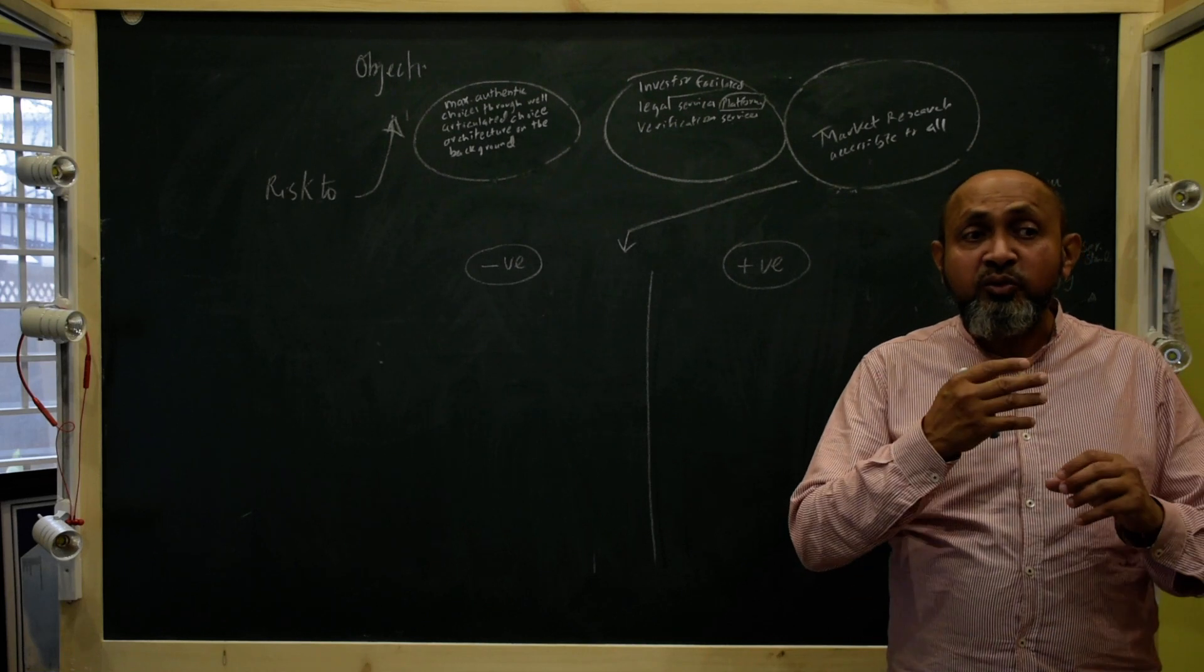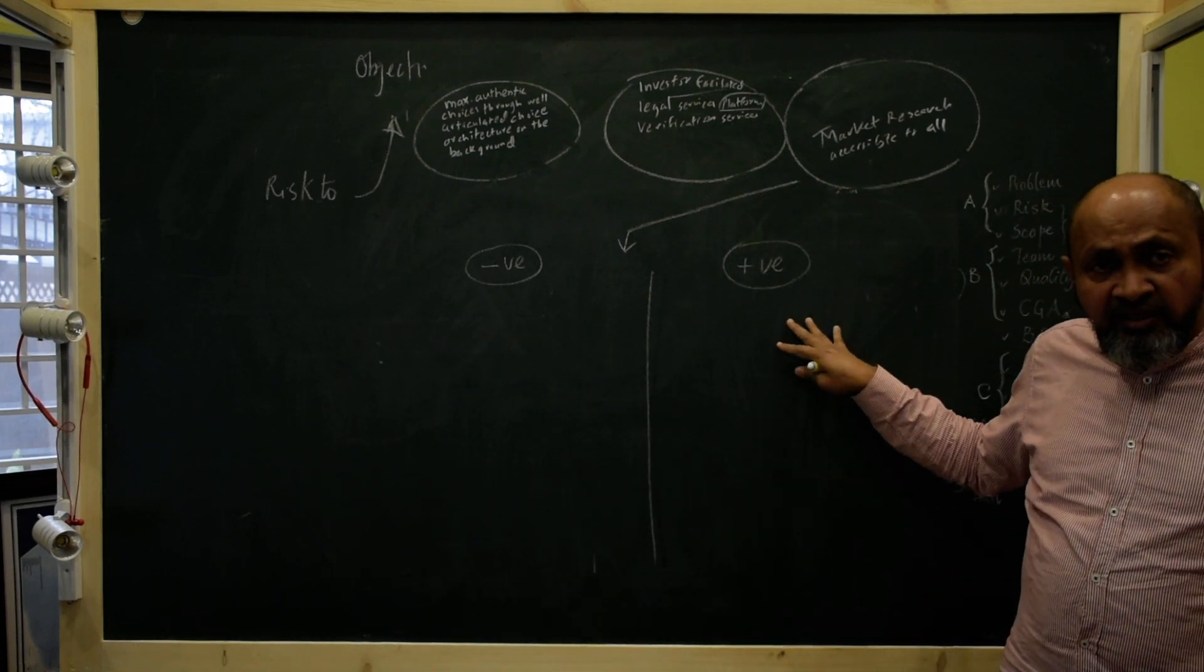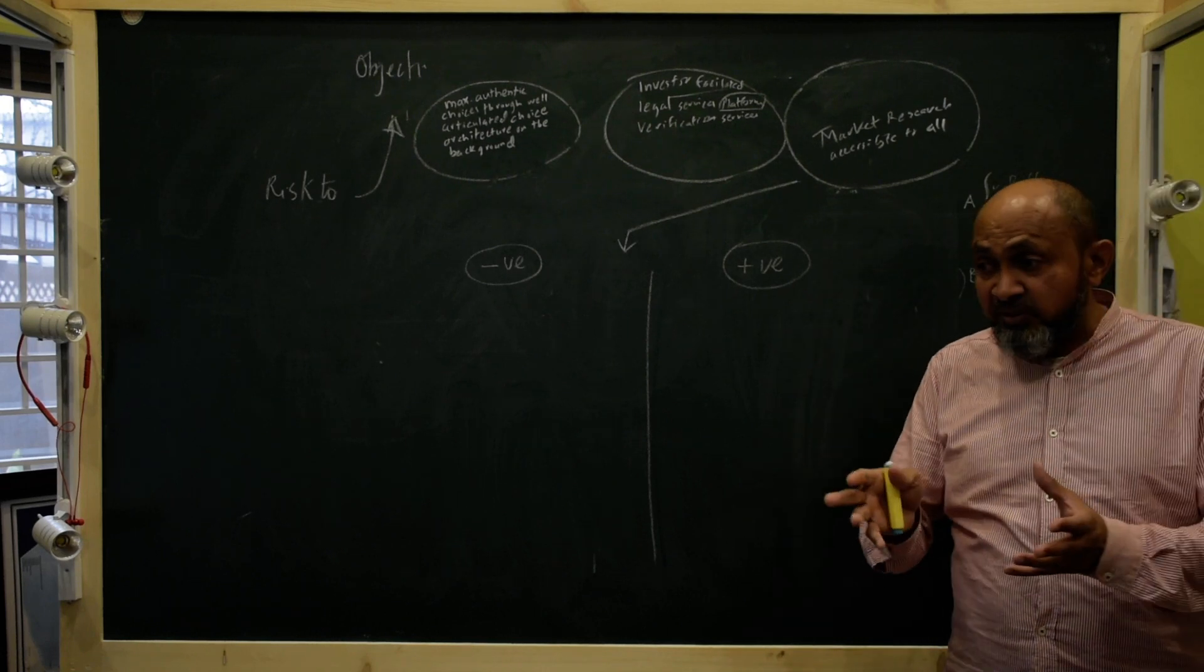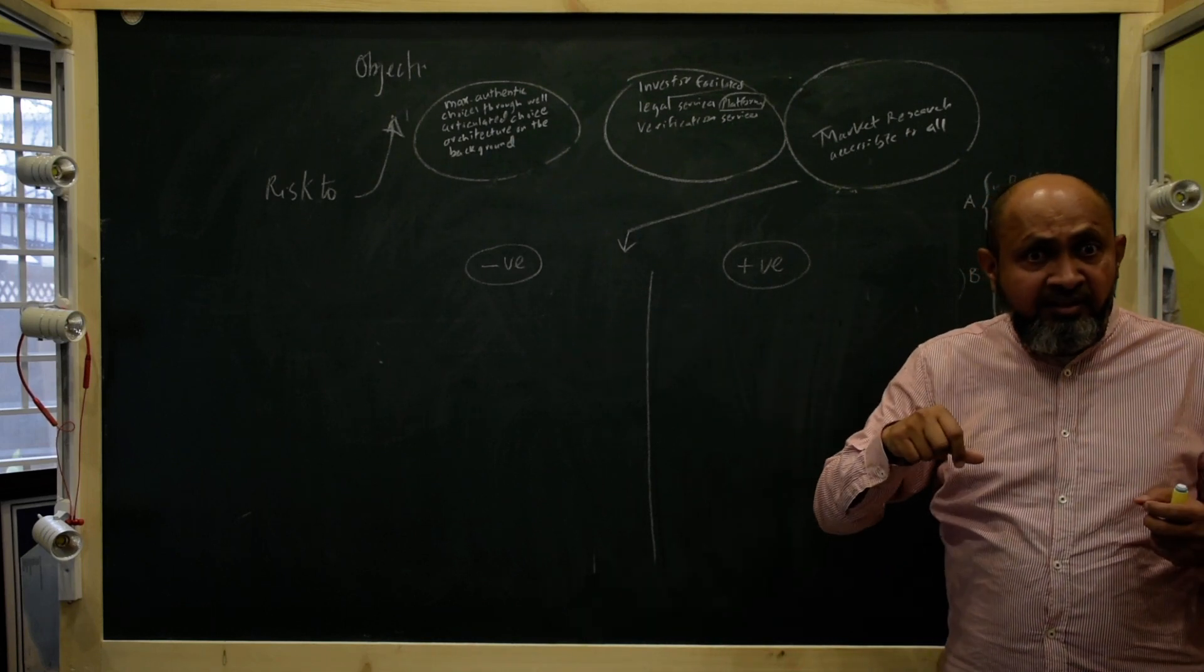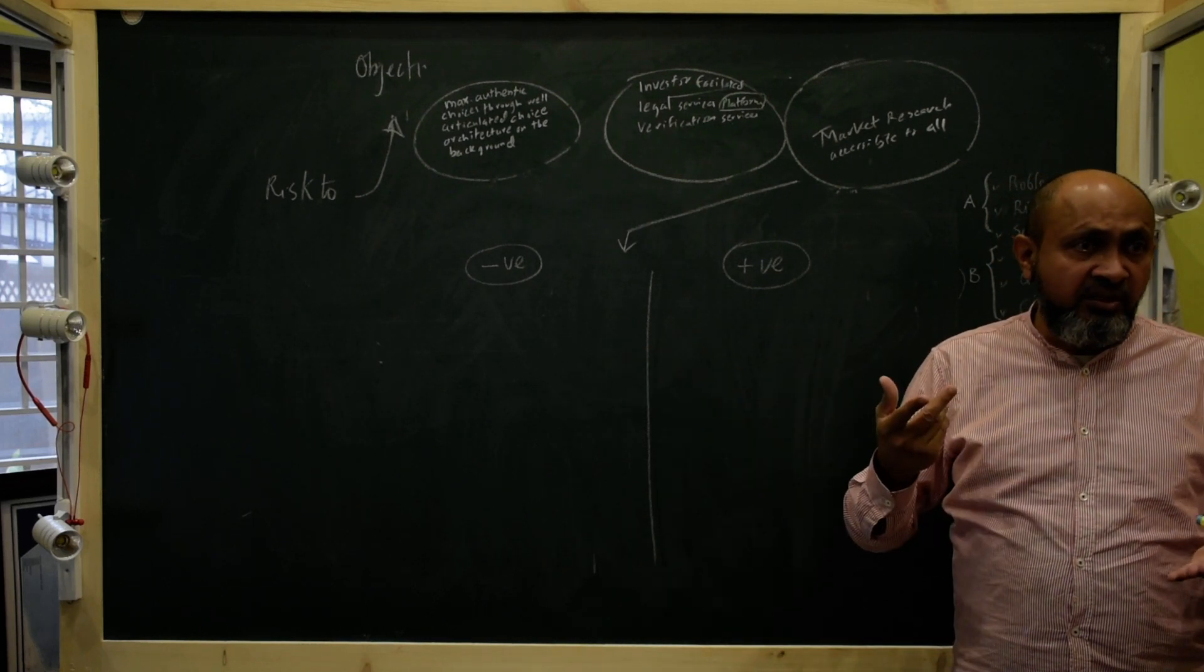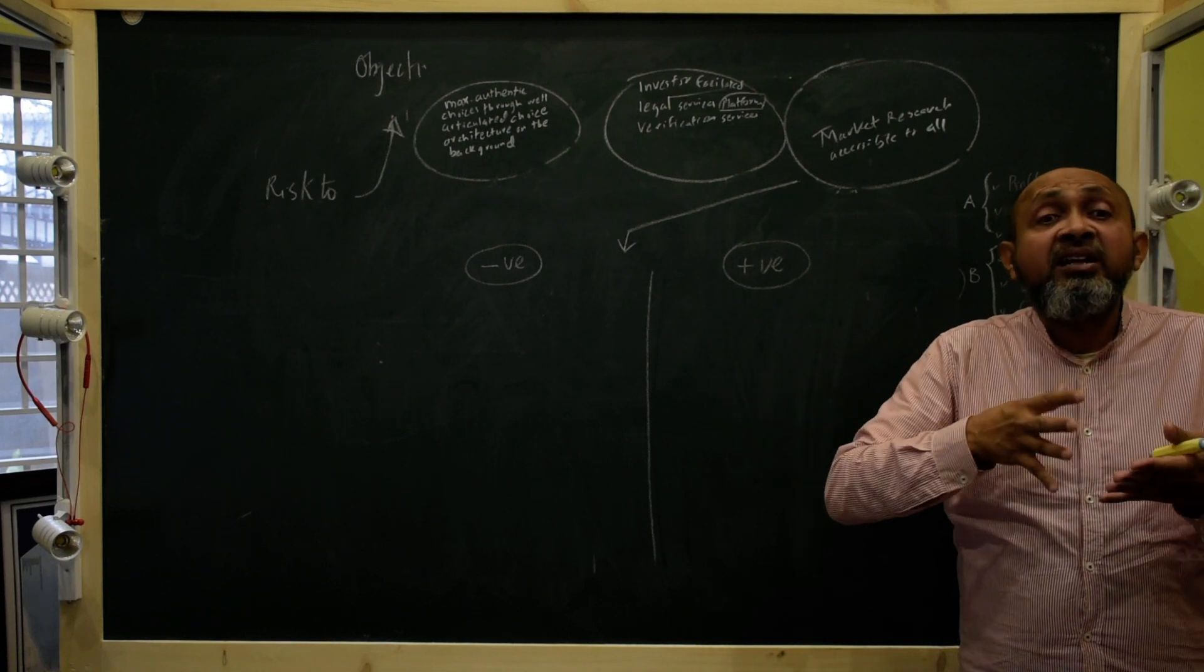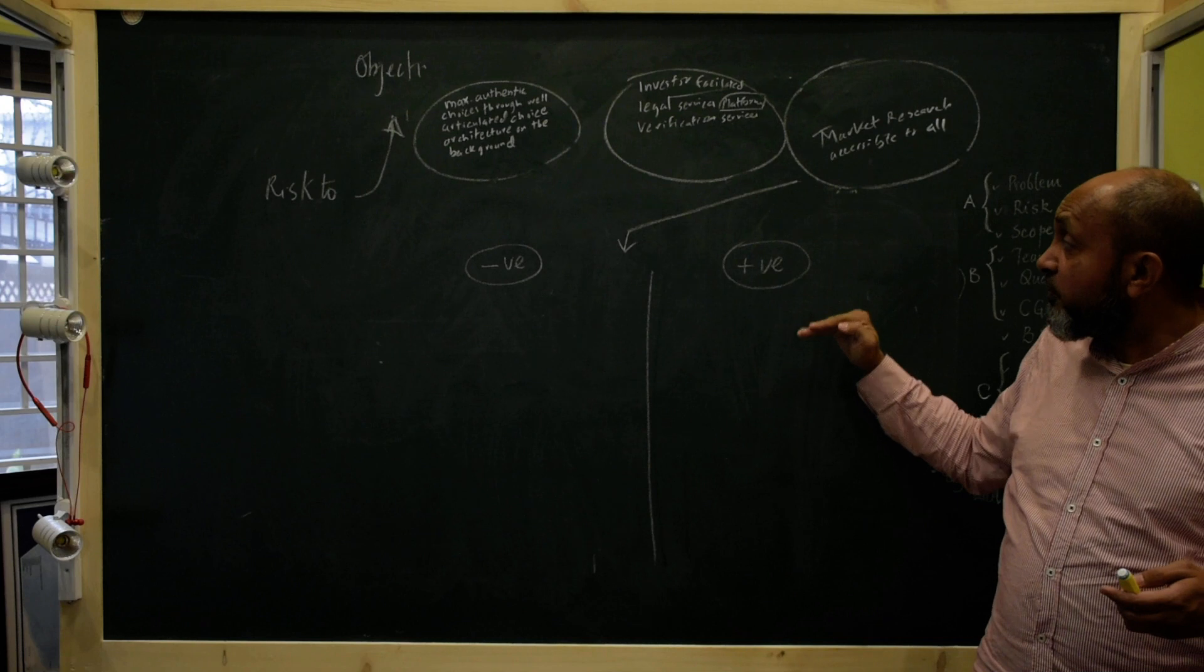Baad me hum dekhenge ke us ko prioritise kaisa karna hai. What can happen positively, yeh uterisks ke yeh hotte hai. What can possibly happen which will help reinforce, accelerate this objective. Misal taak ke ho sakta hai kuhi aisa zabardast hame researcher mil jai. Aisa kuhi information source mil jai. Aisa kuhi connection mil jai to something in the market.